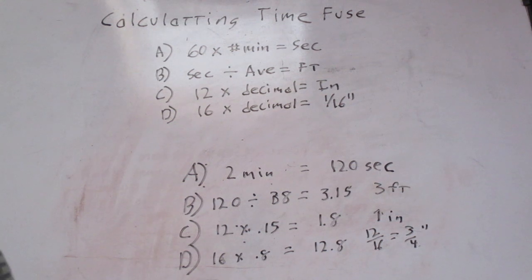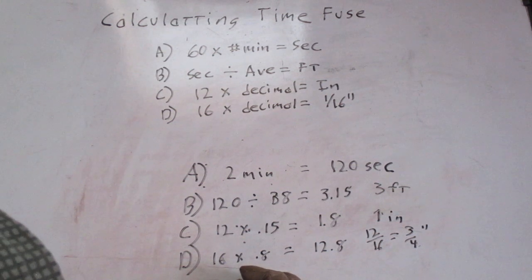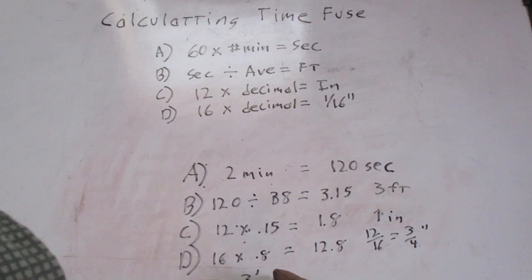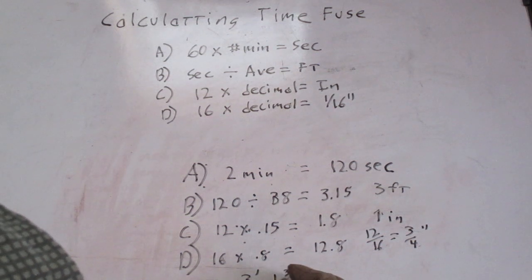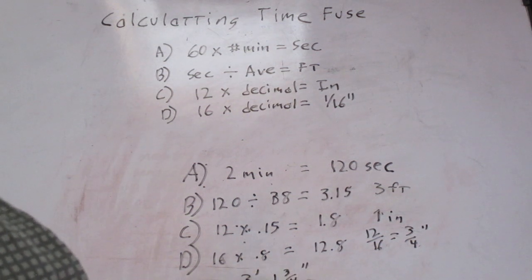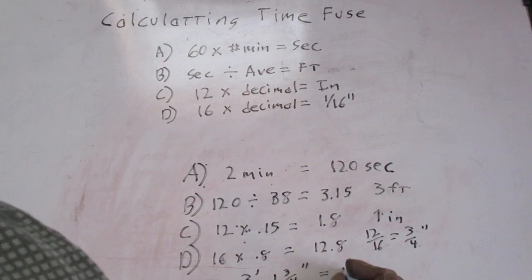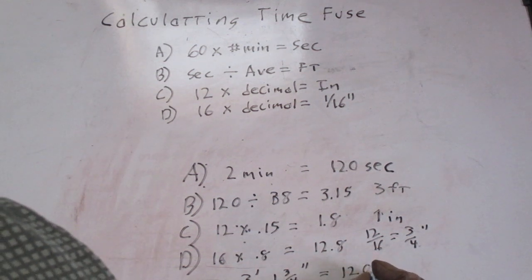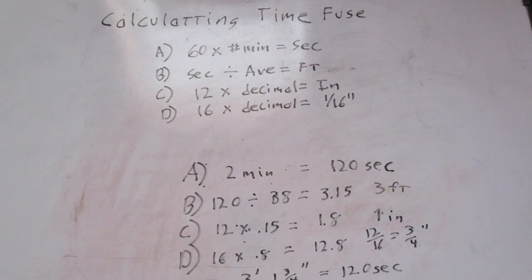So the total length we need for our time fuse is three feet, one and three-quarters inches, and that'll equal roughly 120 seconds. It may vary by about a second, so it could go off at 119 seconds, it could go off at 121, but it will be around that 120-second mark.